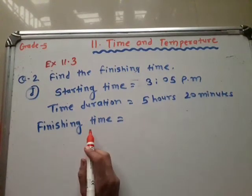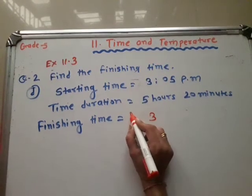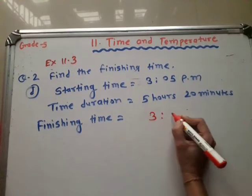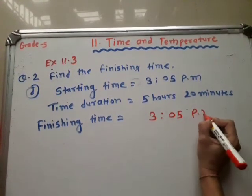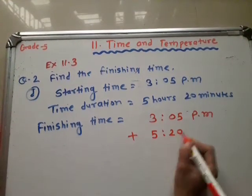Now we find the finishing time. And finishing time, we add the starting time and time duration. 3 o'clock 5 minutes, this is PM, plus time duration 5 hours 20 minutes.